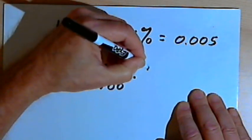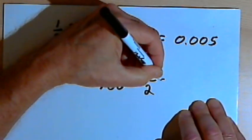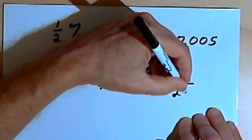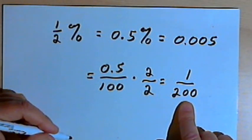2 times 0.5 would be 1, and then 2 times 100 would be 200, and now my fraction is reduced. So I've got 1 over 200.